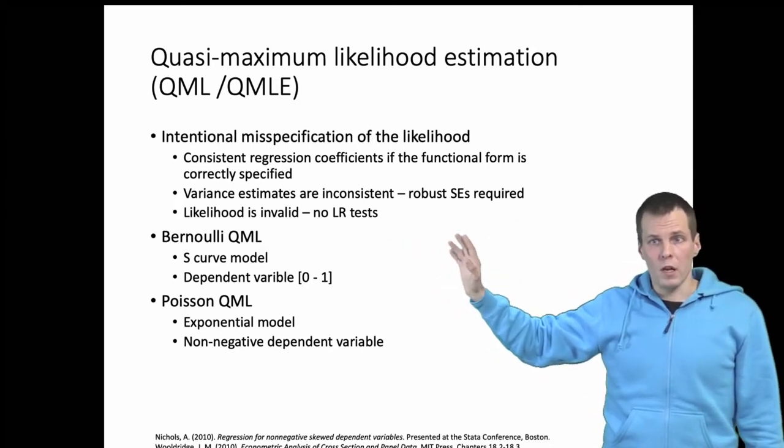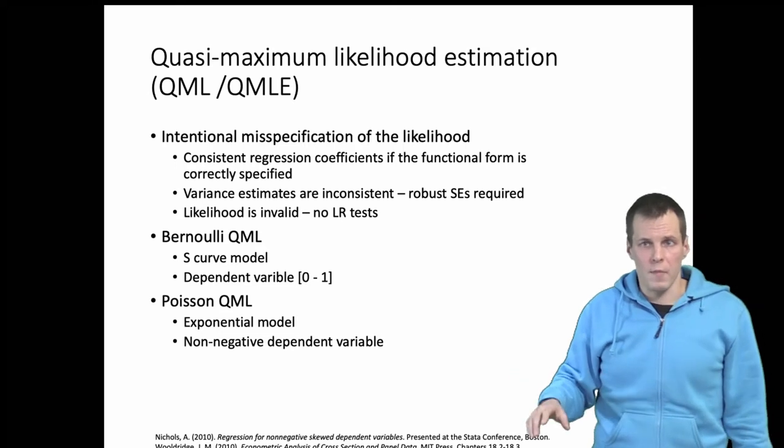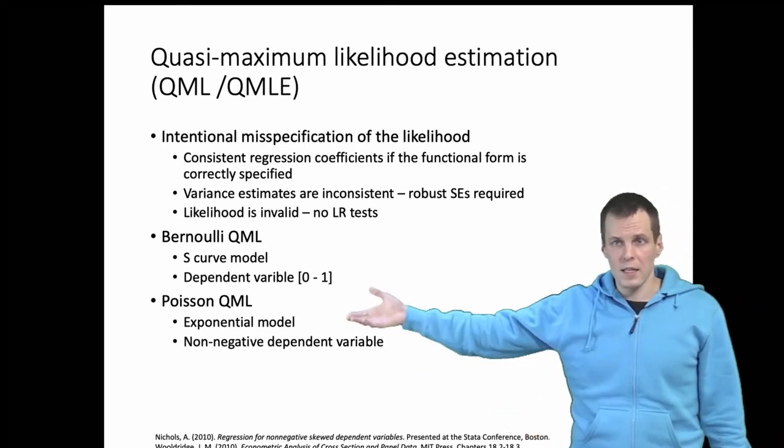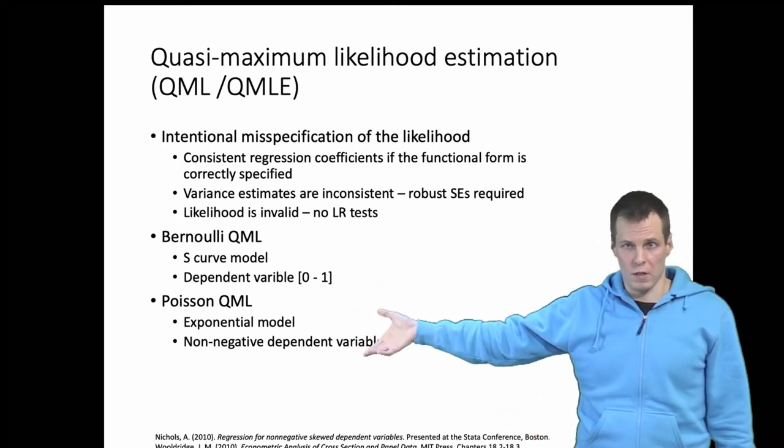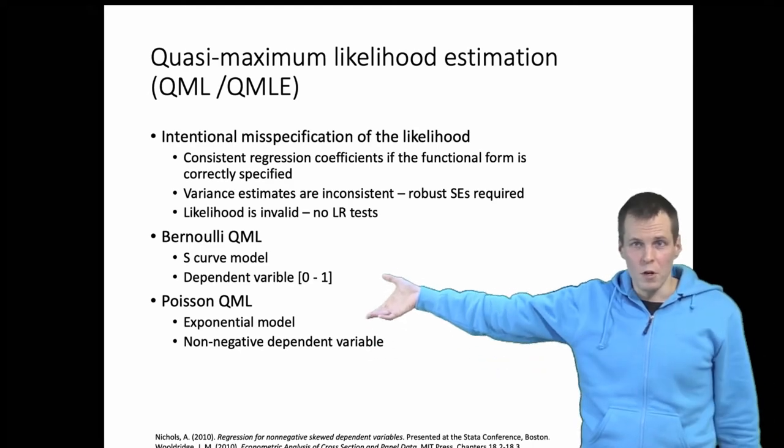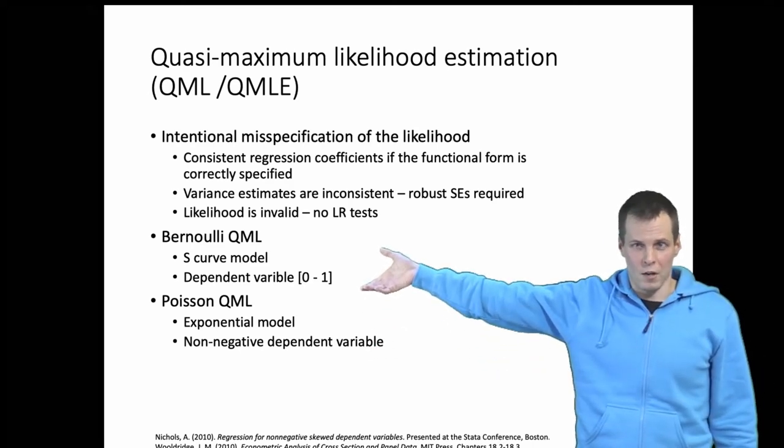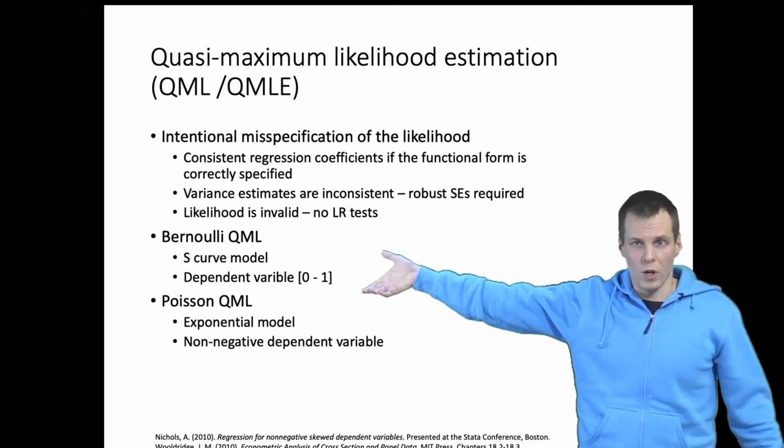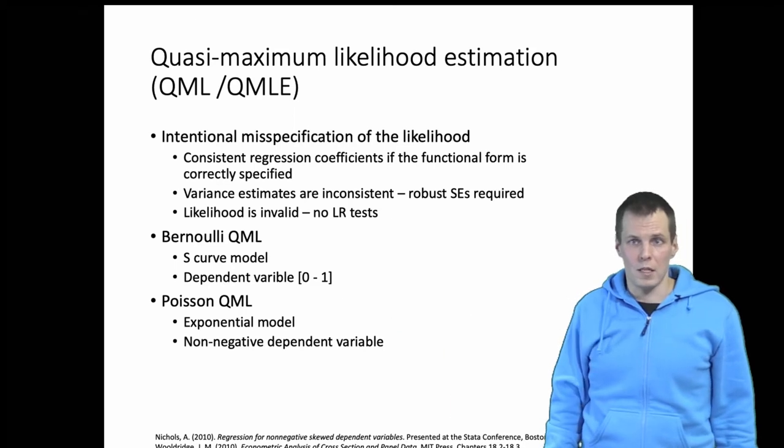There are two important limitations for these quasi-maximum likelihood estimates which is basically just applying Poisson regression to variables that are non-counts or logistic regression analysis applied to variables that are not ones and zeros only but can also take values between one and zero.